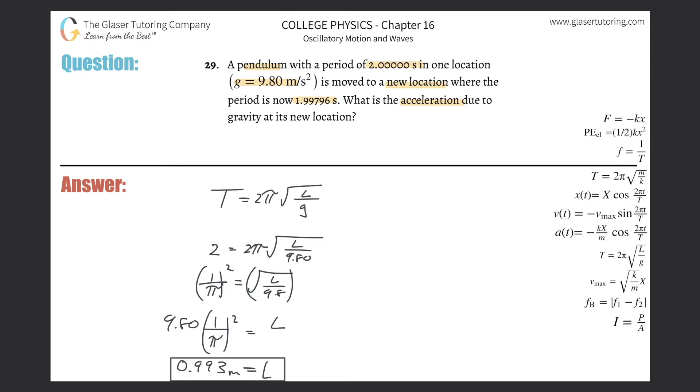So now it wants us to find the acceleration due to gravity in the new location. Well, what's the same? What stays consistent between the pendulum that's in this gravity of 9.8 and then the pendulum that's the same pendulum is going to be placed in the new environment with a different acceleration due to gravity?